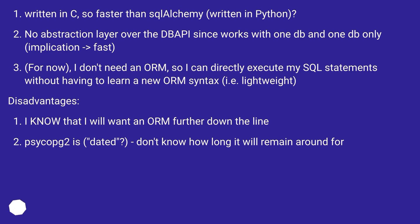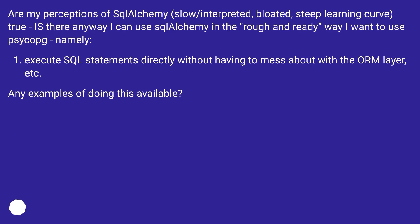Disadvantages: I know that I will want an ORM further down the line. Psycopg2 is dated — I don't know how long it will remain around for. Are my perceptions of SQLAlchemy — slow, interpreted, bloated, steep learning curve — true? Is there any way I can use SQLAlchemy in the rough and ready way I want to use Psycopg2, namely execute SQL statements directly without having to mess about with the ORM layer? Any examples of doing this available?